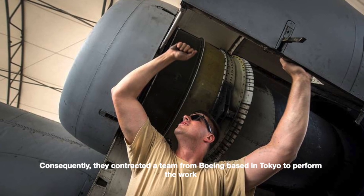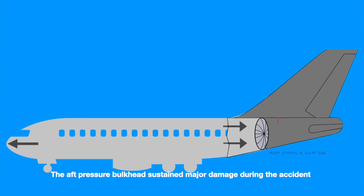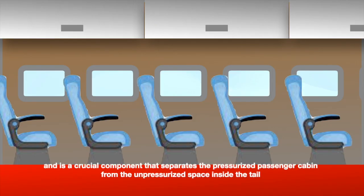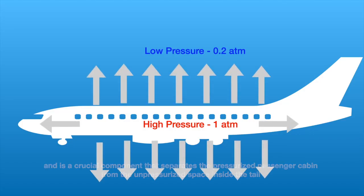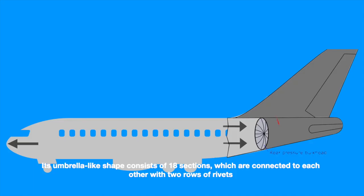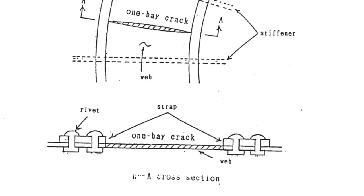The aft pressure bulkhead sustained major damage during the accident and is a crucial component that separates the pressurized passenger cabin from the unpressurized space inside the tail. Its umbrella-like shape consists of 18 sections which are connected to each other with two rows of rivets.